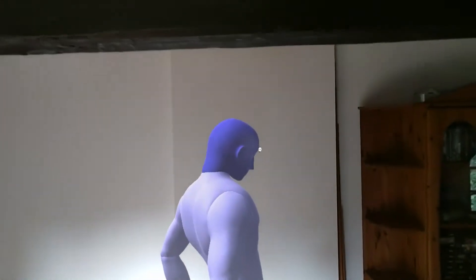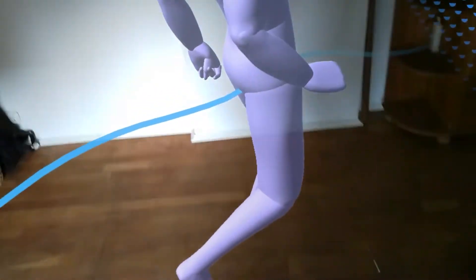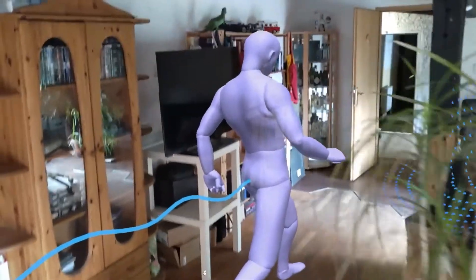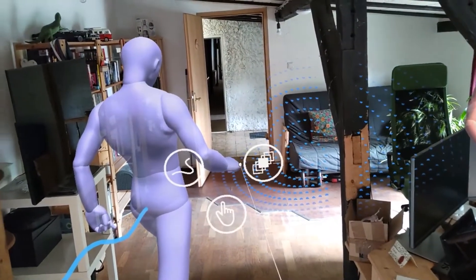By performing an air tap and hold on a body part, a radial menu provides access to a set of visualizations specific to each body part. For example, the gaze visualization can be accessed by interacting with a person's head, while the touch visualization is available at the hands.